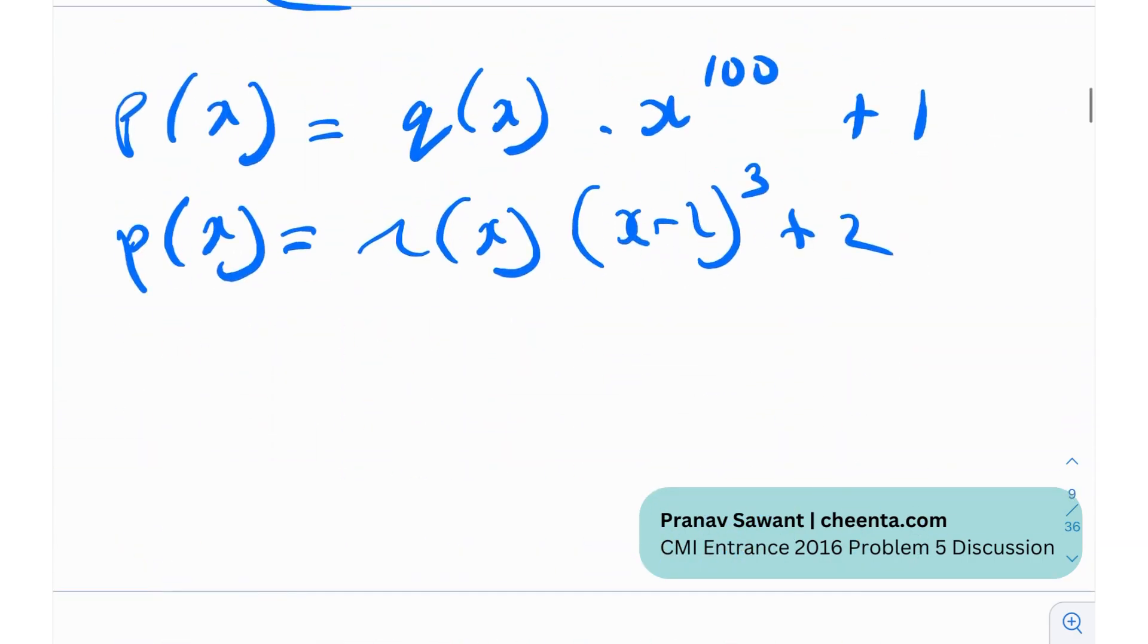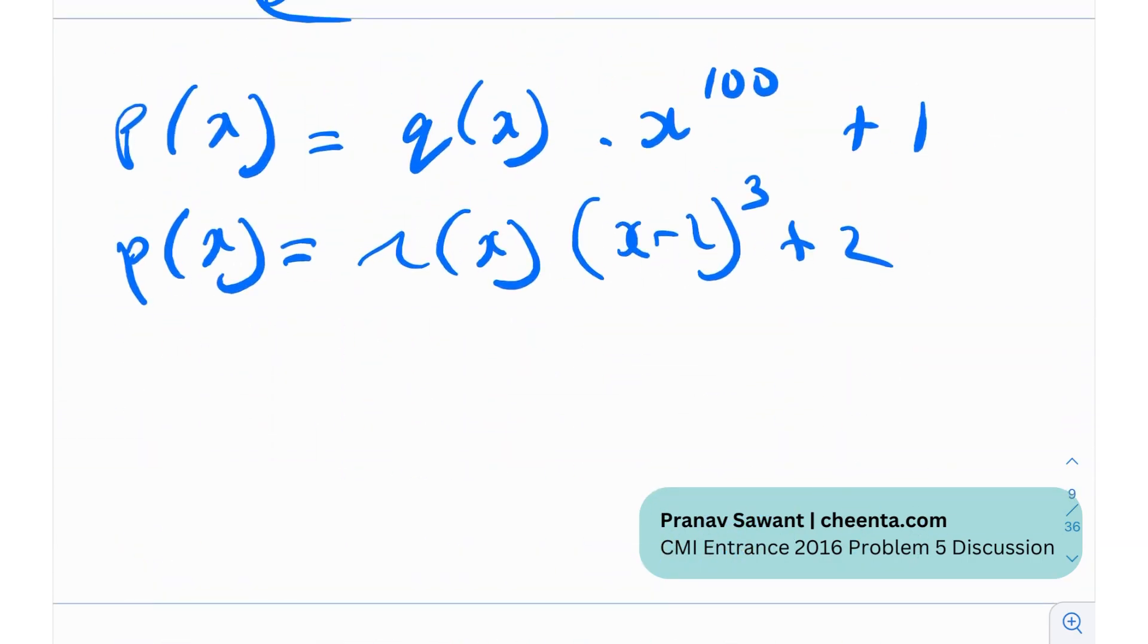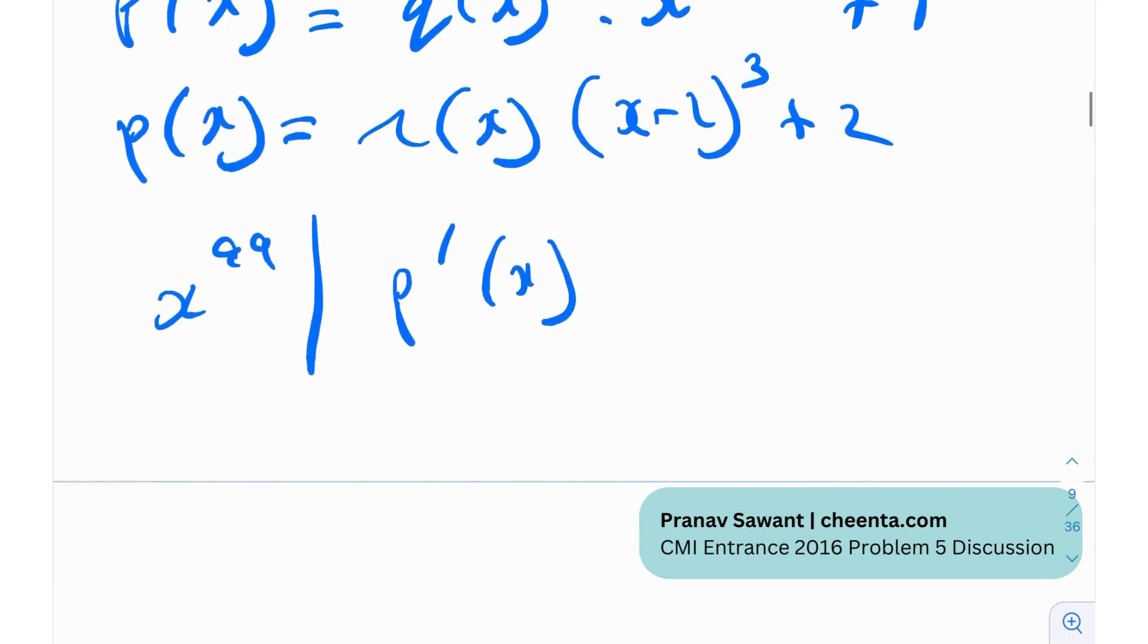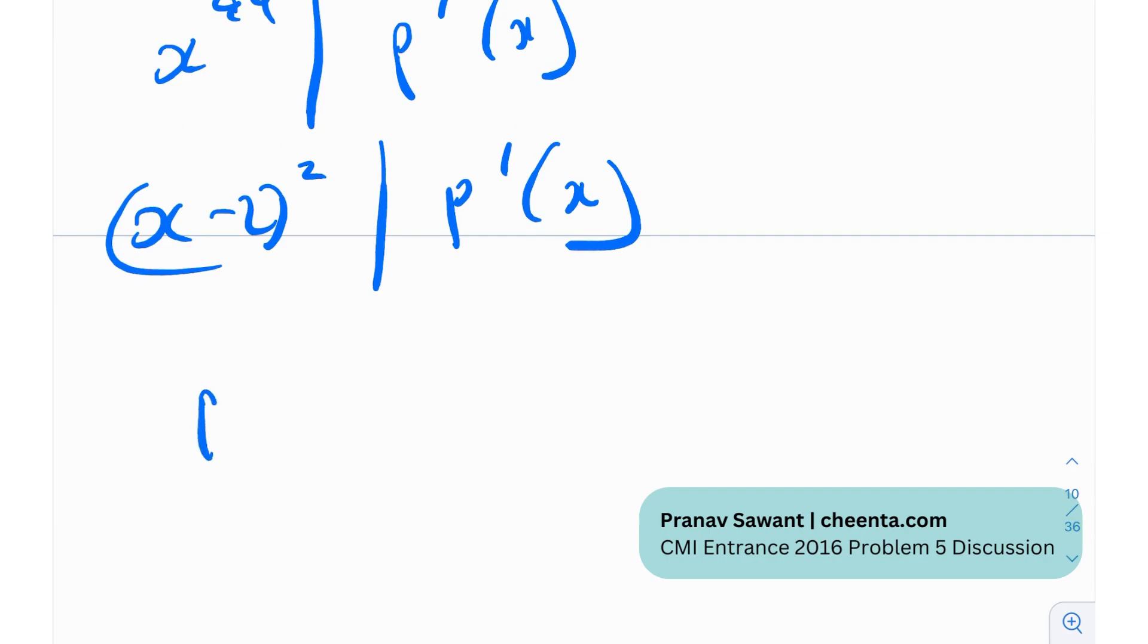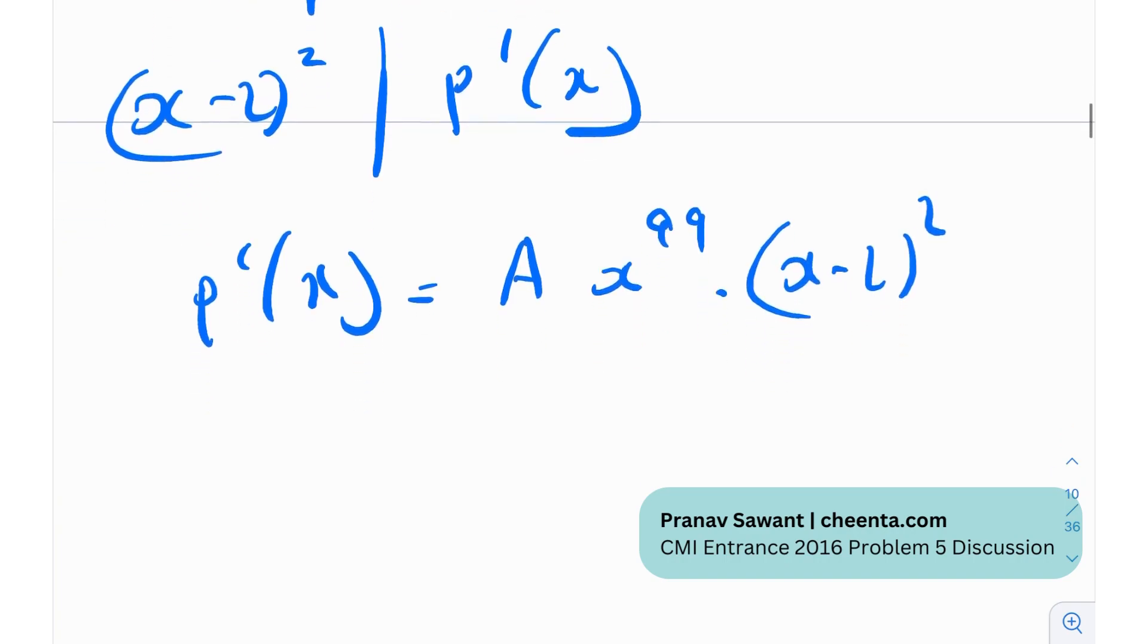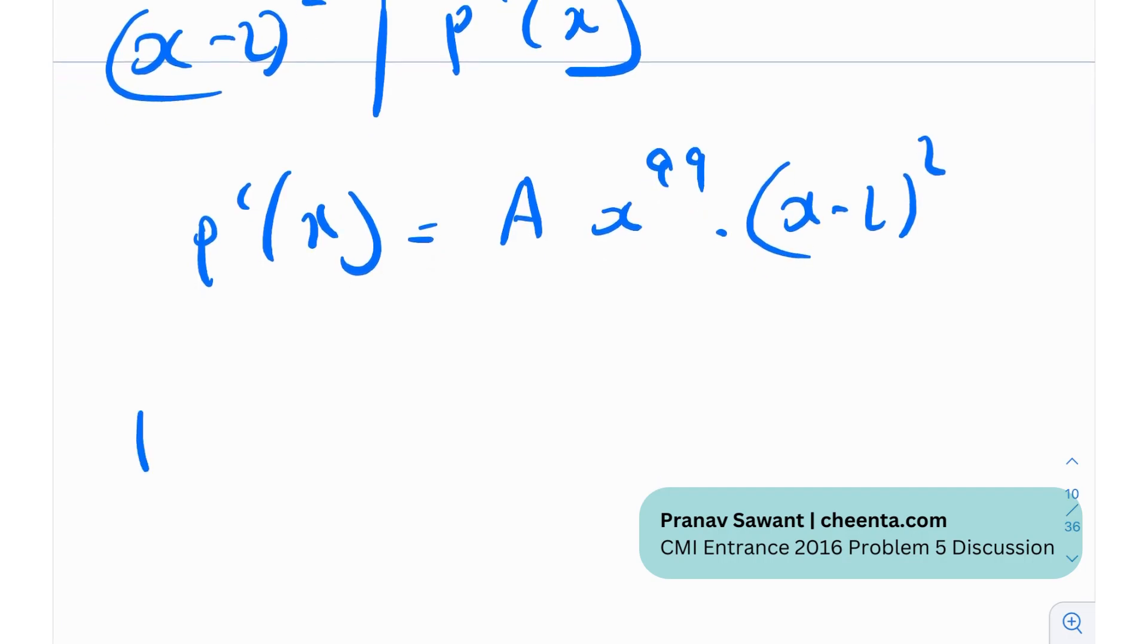Now we essentially now can say that p of x is divided by x to the 99 p prime x right from this theorem that we just stated and similarly (x minus 2) squared should also divide p prime of x so now what can we conclude from here now I can essentially conclude that p prime of x will be nothing but a times x to the 99 times (x minus 2) squared right and that's actually great because now it's actually solvable.